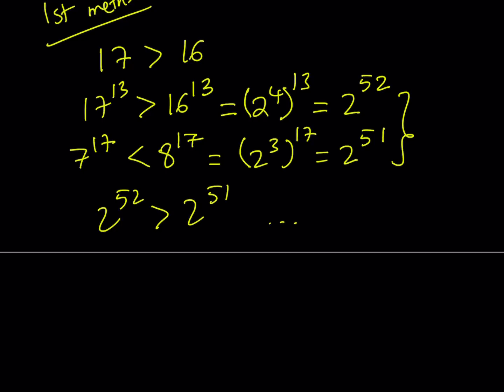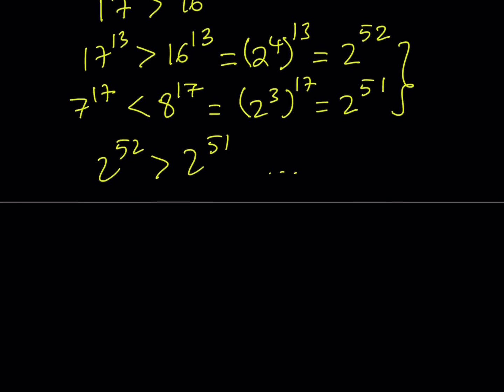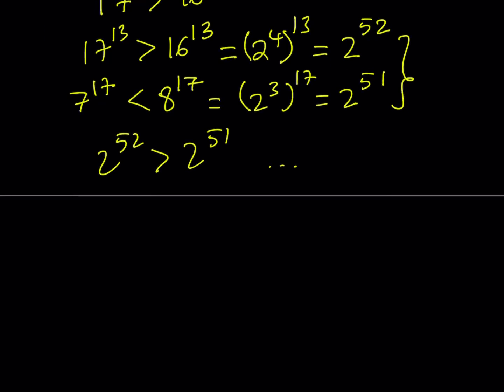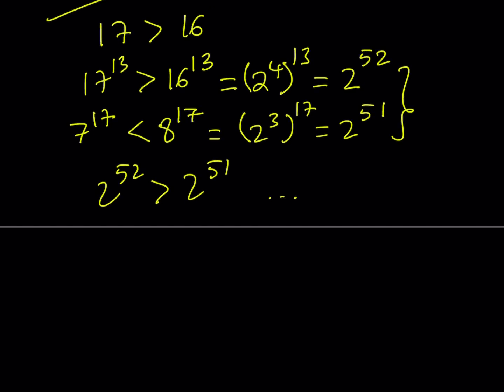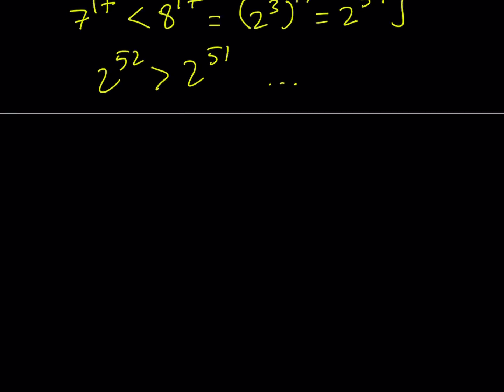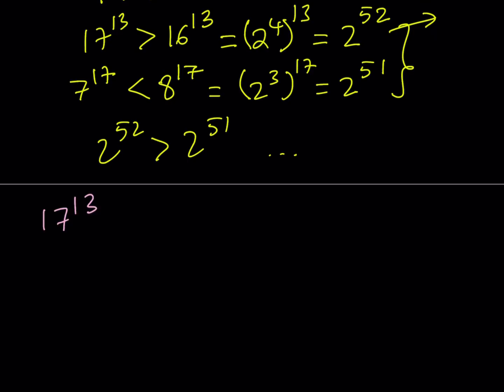So we can just go ahead and use this. Now we can start off with the first chain of inequalities. We have a power of 2 that is greater than another power, but our number, one of our numbers, 17 to the power of 13, is even greater than that. So we're going to start with 17 to the power of 13, and we do know that it is greater than 2 to the power of 52.